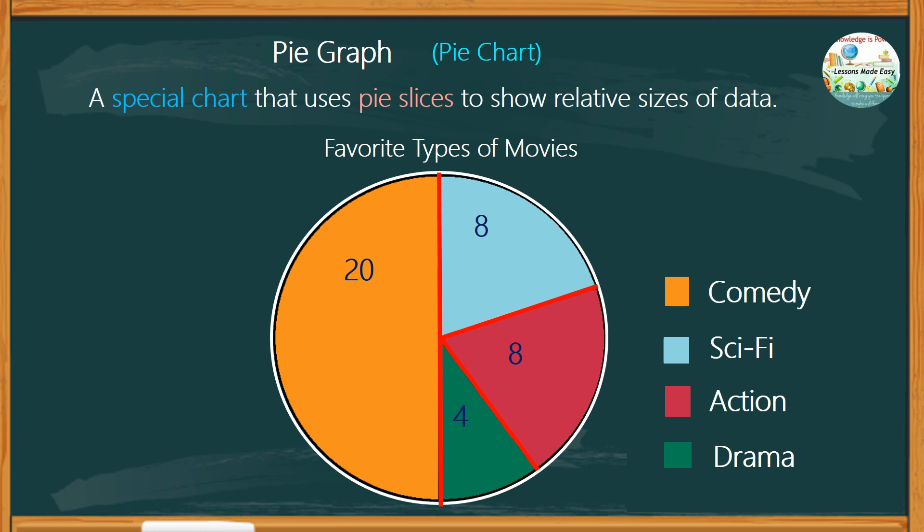Each category can be expressed as a fraction, percentage, and even angle, or the measurement in degrees. I will create a separate lesson solely on pie charts, so watch out for my next upload.